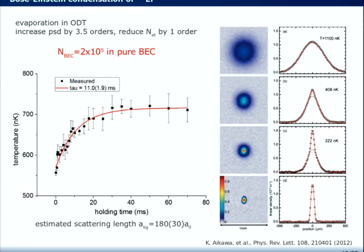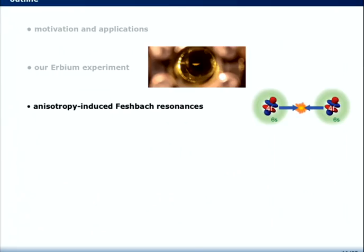Then loading into the optical dipole trap and performing evaporative cooling enabled us just last year to create the first Bose-Einstein condensate of erbium. You see here the phase transition. And we have a very efficient cooling for the isotope 168 because this one has a quite preferable background scattering length of 180 a0. The measurement of the background scattering length was done by a cross-dimensional thermalization measurement. And this is the reason why our evaporation is quite efficient. So we have an increase of the phase space density by 3.5 orders of magnitude and only a reduction of the number of atoms by one order. So we end up with our system in 2.2 times 10^5 atoms in the pure BEC.